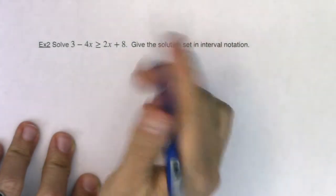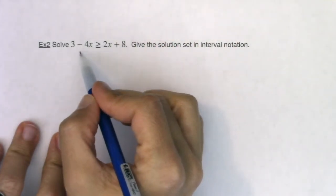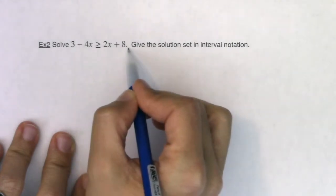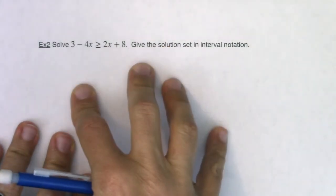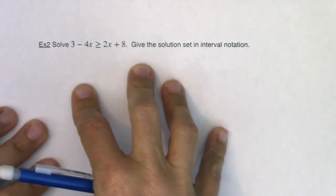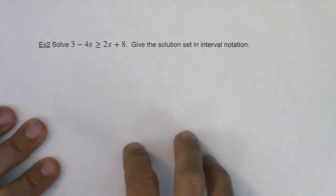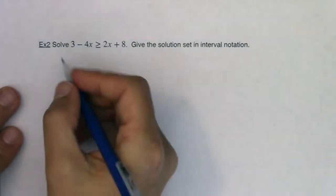But for me personally, I like positive coefficients, so I would actually add the 4x to this side and then subtract the 8 over. So I'm gonna do it my way first and then I'm gonna do the way I think most of you would have initially gone if you weren't watching this video.